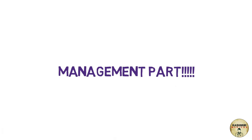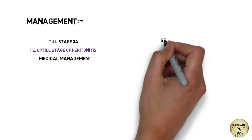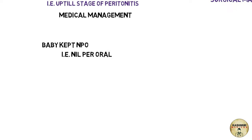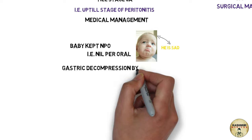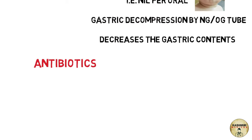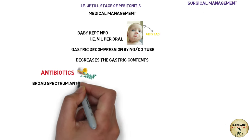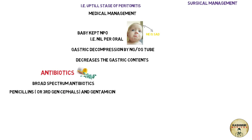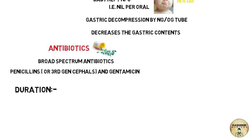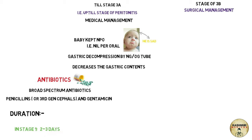The management is divided into two parts: up to stage 3A, which is medical management, and stage 3B, which is surgical. Medical management involves keeping the baby NPO — nil per oral — and gastric decompression with a nasogastric or orogastric tube. Broad-spectrum antibiotics are preferred, including penicillin or third-generation cephalosporins plus gentamicin. Duration: 48 to 72 hours for stage one, and seven to ten days for stages two and 3A.